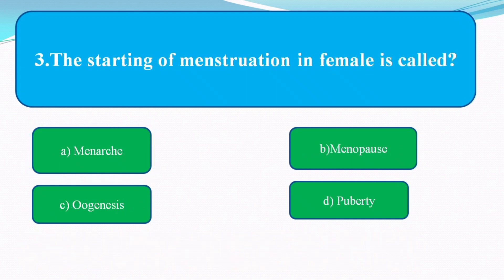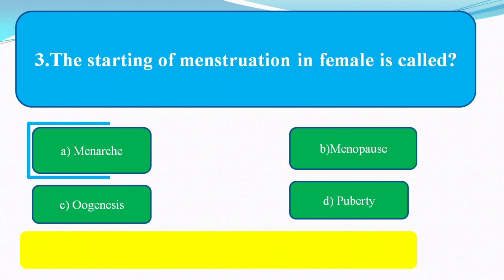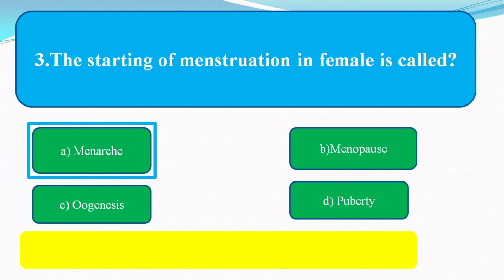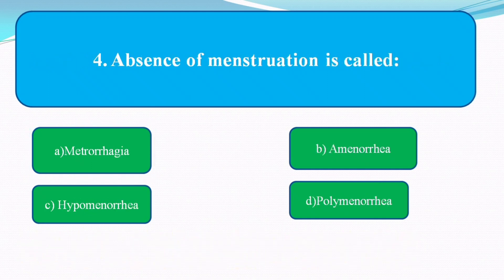The starting of menstruation in a female is called? The next question is: the absence of menstruation is called?